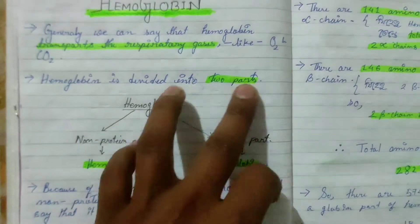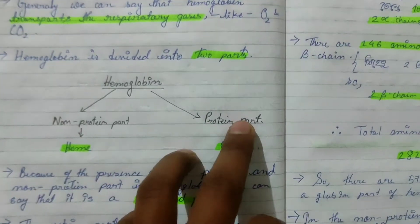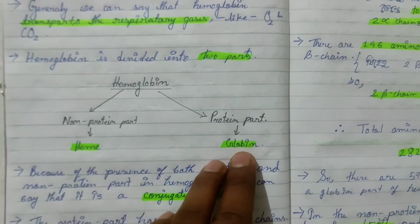Hemoglobin is divided into two parts: the non-protein part, which is heme, and the protein part, which is globin.